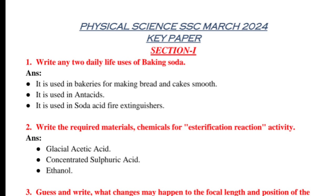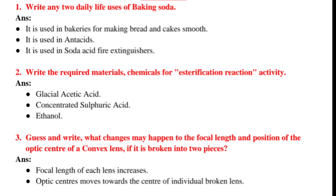Question number 3. Guess and write, what changes may happen to the focal length and position of the optic center of a convex lens if it is broken into two pieces? Answer: Focal length of each lens increases. Optic centers move towards the center of individual broken lens.